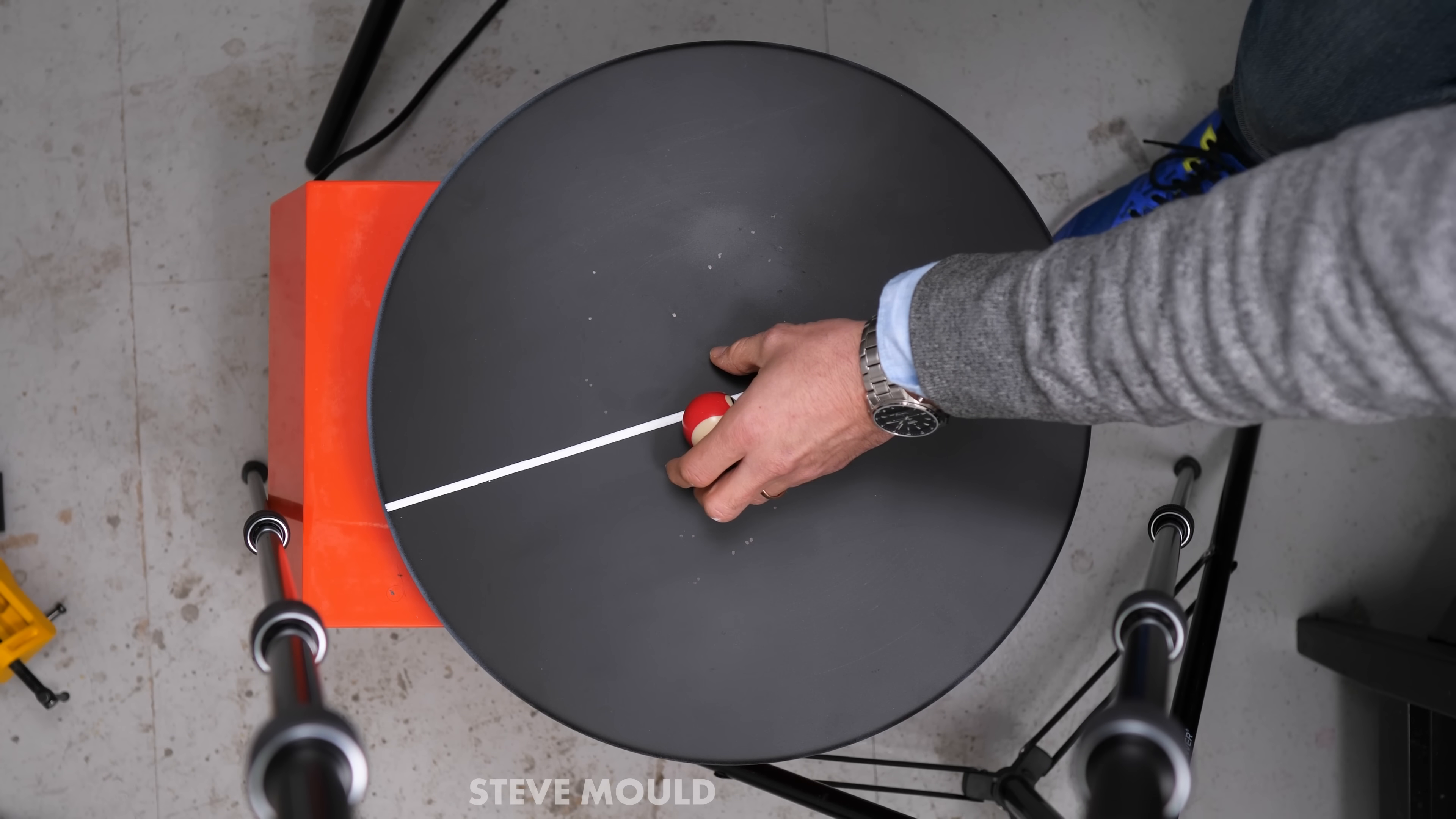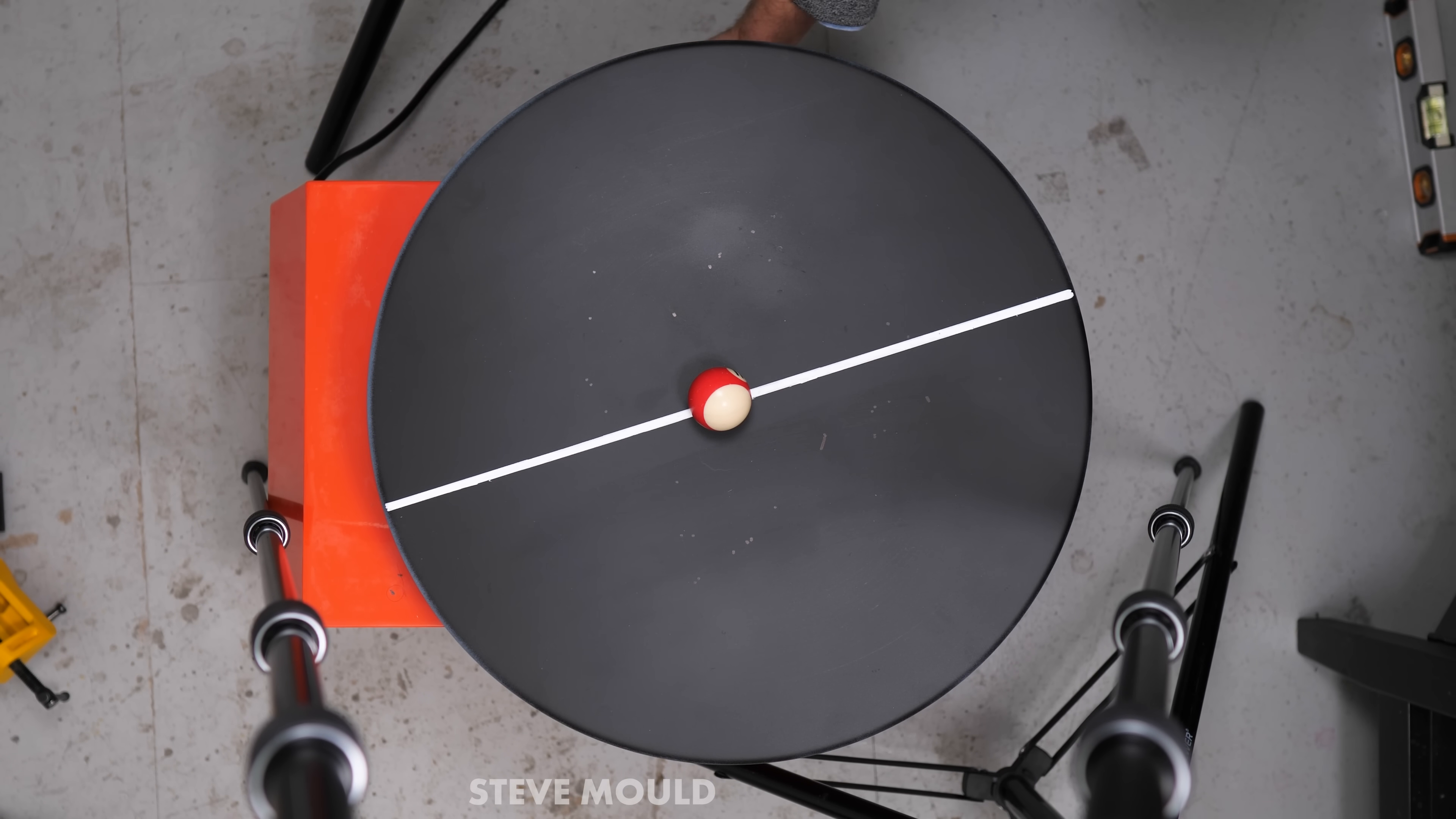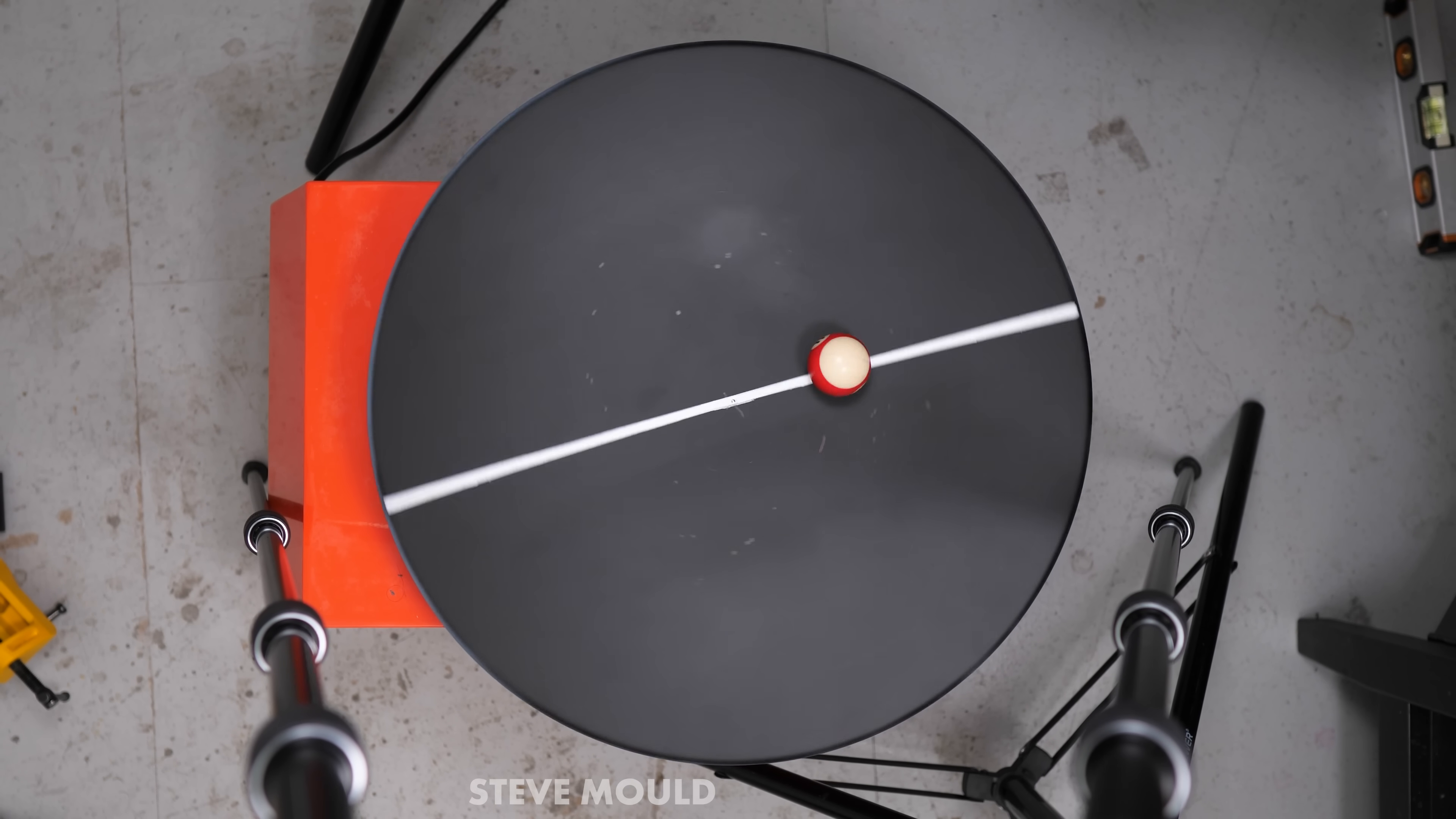What happens when you put a ball on a turntable and then start spinning the turntable? Intuitively, you might expect the ball to be flung from the turntable. That's certainly what I thought would happen. But look, instead, the ball goes into a kind of circular motion on the plate.